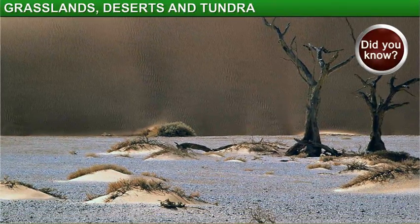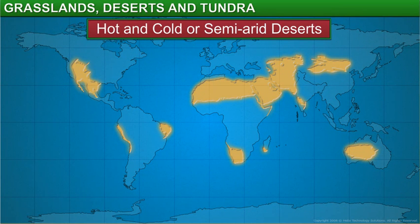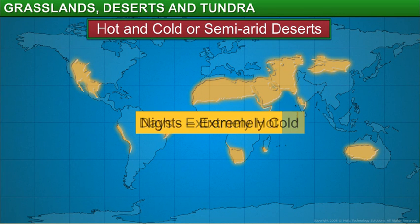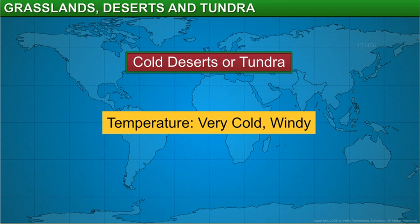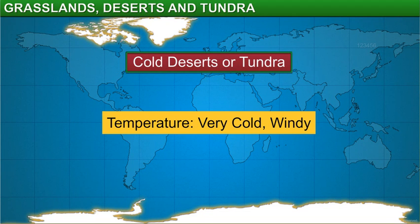Did you know that not all deserts are extremely hot? Deserts in North America, Europe, and Northern Asia are extremely hot during the day and very cold during the night. They are called semi-arid deserts. Deserts in the polar regions of Antarctica, Greenland, and parts of North America are always cold. These are called cold deserts or tundra.